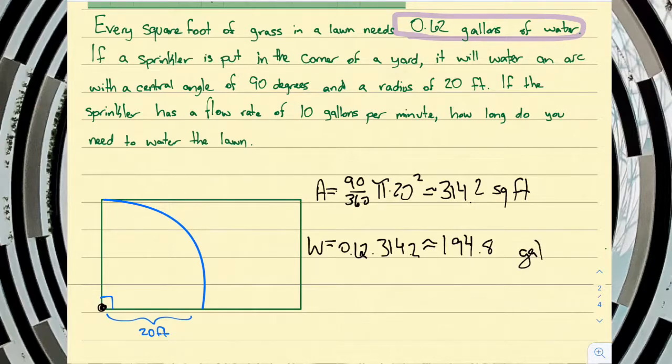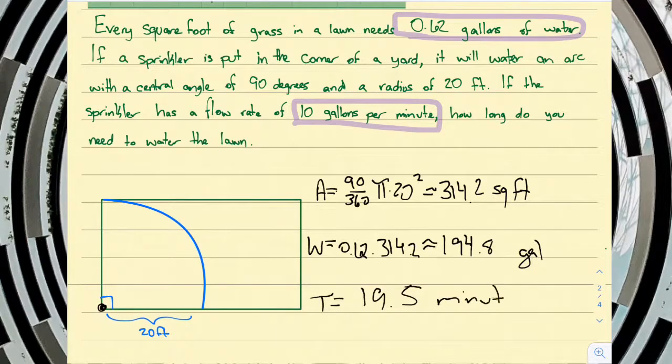Alright, and a fair assumption is that our sprinkler has a flow rate of 10 gallons per minute. So, if we're spraying water at 10 gallons a minute, and we need to spray 194.8 gallons, we can just divide those two to get the time. So, 194.8 divided by 10 is about 19 and a half minutes. You can probably round that to 20.